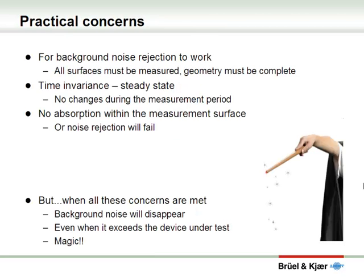In order for background noise rejection to work, a number of practical concerns should be explained. All the measurement surfaces must be measured — the geometry has to be complete. The device under test and the external noise source should be steady state; in other words, no changes over time. And within the measurement surface, there should be no absorption. If you make sure all these concerns are met, then you will be able to eliminate the influence of background noise, even when the background noise is higher than the device you are testing. This is acoustic magic.